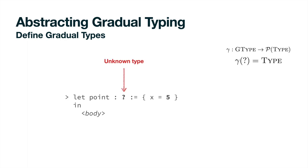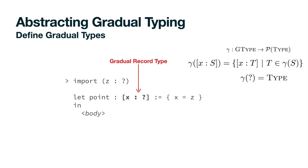This question mark represents the unknown type, which accounts for any possible static type. Because we intend to give programmers more flexibility, we want to accept types with partial information, so that we can assign a type to point that is more specific than unknown, even when static information is incomplete. In this case, we have no information about the type of Z, but we know that point must be a record with a single field X. To be able to express this type, we introduce gradual records.